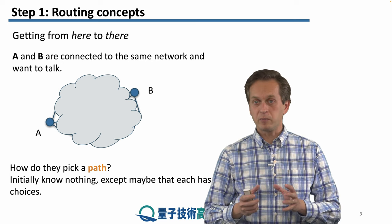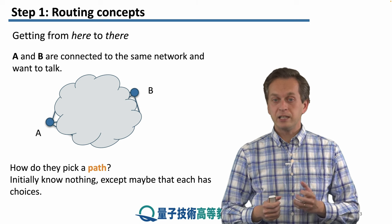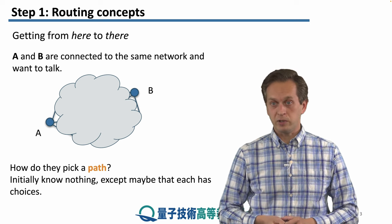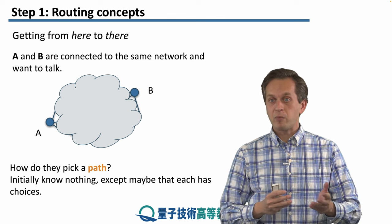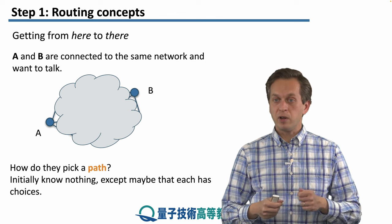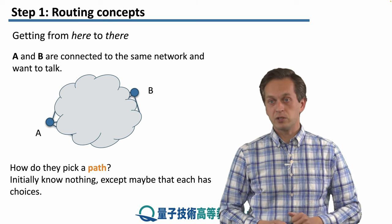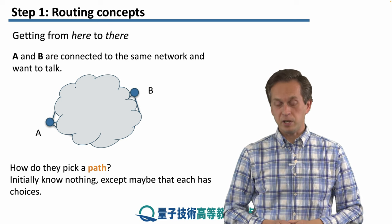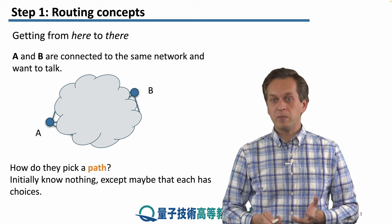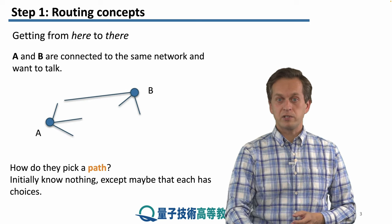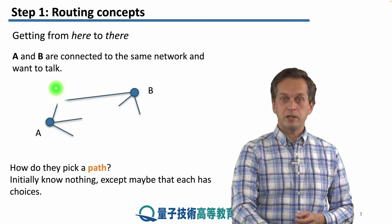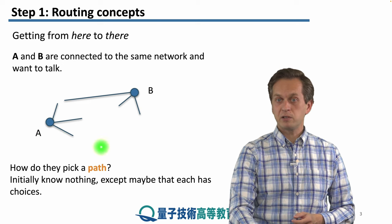And also to make the problem a little bit harder, initially the nodes don't know anything about the topology of the network or about how much effort it takes to communicate from one node to the next node to the next node until we reach the final destination that is B. At best, what they may know is that they have few choices. For example, A has three connections or three links coming out of it, and so does B.